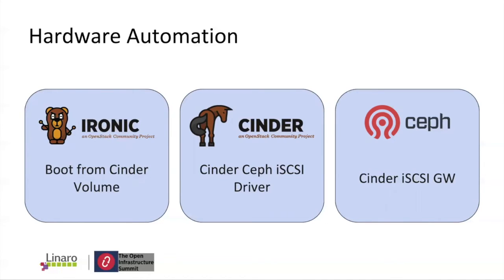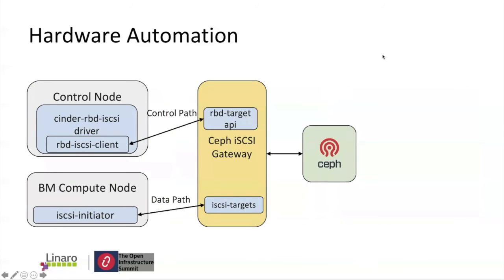We are currently blocked on CI job failures for the Ceph iSCSI driver merge. The last part is the Cinder iSCSI Ceph gateway, which is a Ceph component we need to make stable and production-ready. On the control plane, we need to leverage the Cinder RBD iSCSI driver, install the RBD iSCSI client to connect with the Ceph iSCSI gateway, which can be deployed alongside Ceph using ceph-adm, ceph-ansible, or manually. After deployment, it exposes an RBD target API to talk with the Cinder client and perform operations on the Ceph side. On the data plane, the bare metal node uses the iSCSI initiator to connect to the iSCSI target set up on the iSCSI gateway.